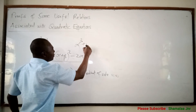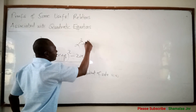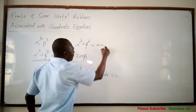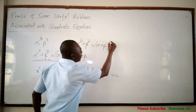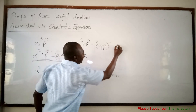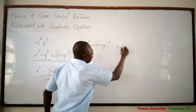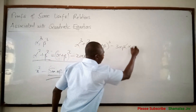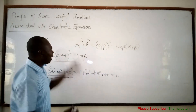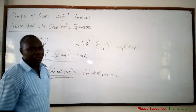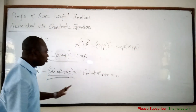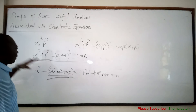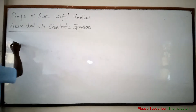Alpha cubed plus beta cubed is equal to alpha plus beta, all cubed, minus 3 alpha beta times the bracket alpha plus beta. You ask: why is this equal to this? So today I want us to look at why these relations are true.